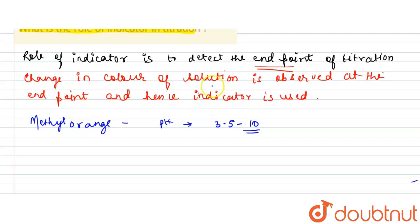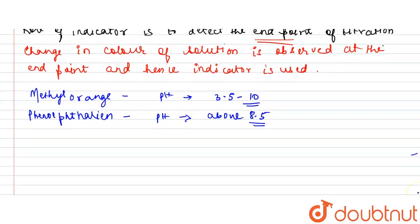So it determines what type of indicator should be present. Like you have phenolphthalein indicator. Phenolphthalein shows color change in pH above 8.5.